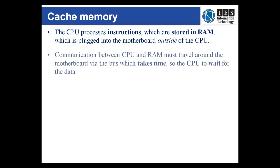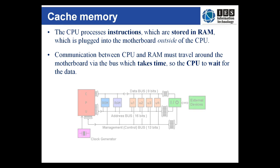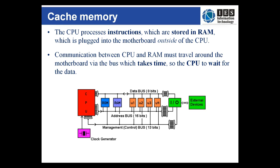Once loaded, the data has to travel from RAM to the CPU. That communication time can often be the slowest part of processing data in the computer. The system of wires, ports and devices that are responsible for the communication inside your computer are known as the bus. If you have a slow bus, your computer will be slow.